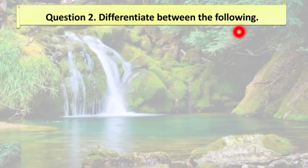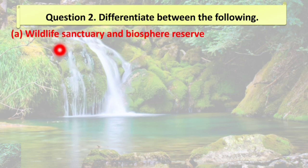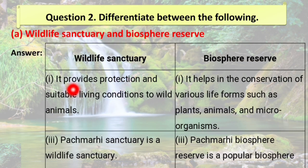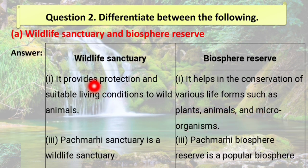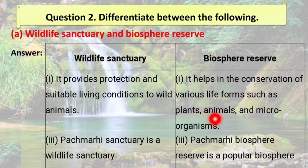Question number 2: differentiate between the following. First: wildlife sanctuary and biosphere reserve. Wildlife sanctuary provides protection and suitable living conditions to wild animals, while biosphere reserve helps in the conservation of various life forms such as plants, animals, and microorganisms. Pachmari sanctuary is a wildlife sanctuary, while Pachmari biosphere reserve is a popular biosphere reserve.